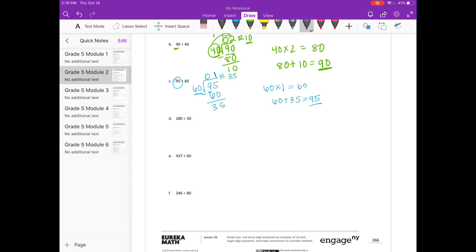D, 280 divided by 30. So 30 can't go into 2. It can't go into 28. But it can go into 280. I'm just going to go down to 3. Look at how many times 3 can go into 28. And forget about the 0's for a second.